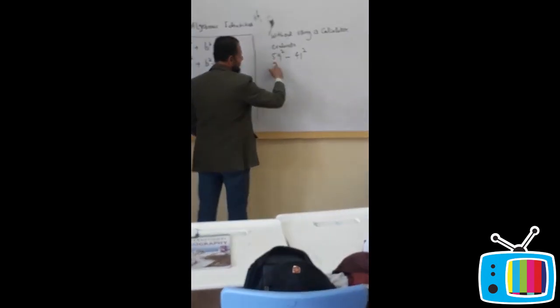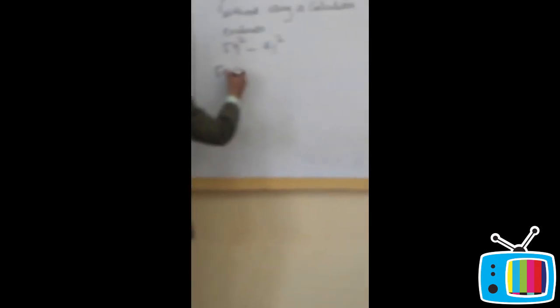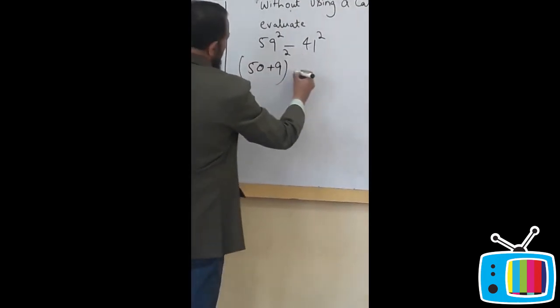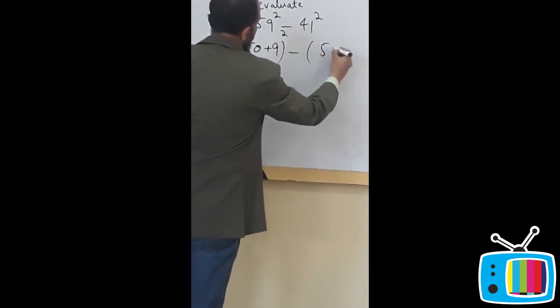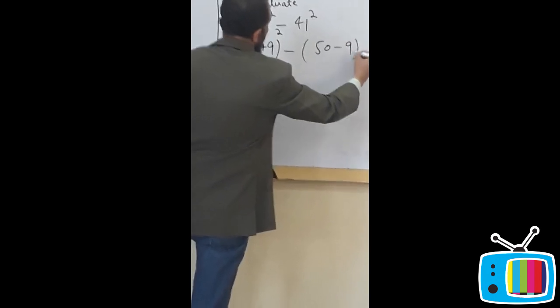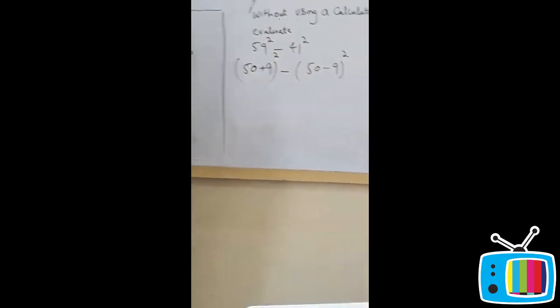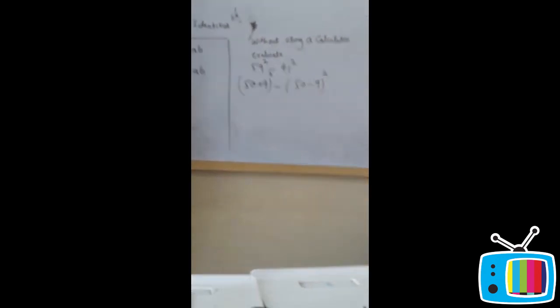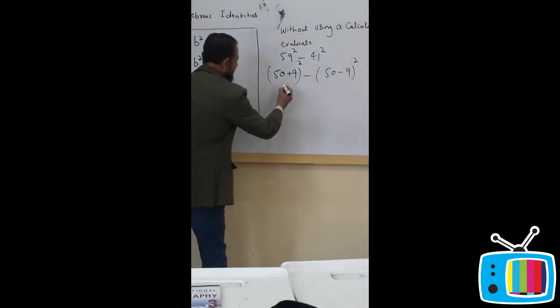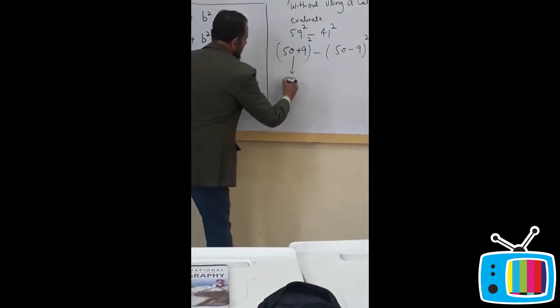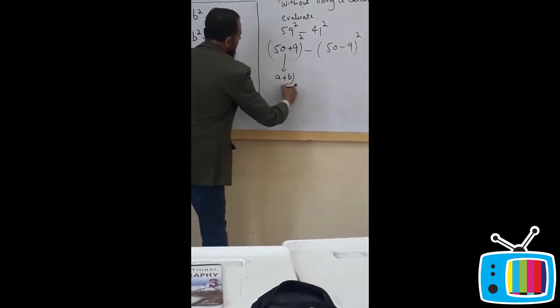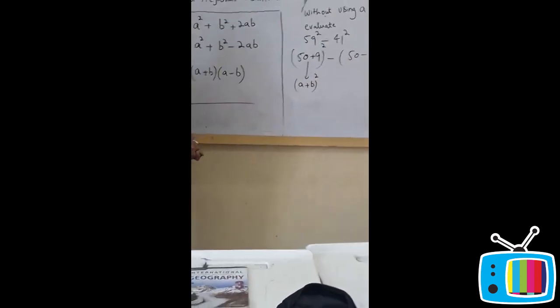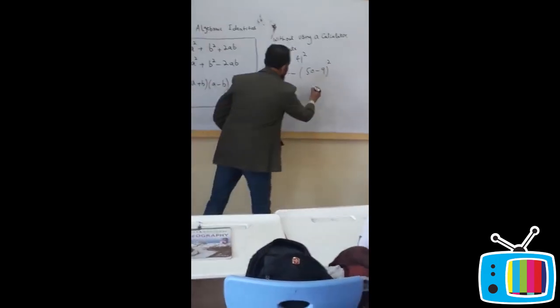Let's flip this number (50+9)² minus (50-9)². That's very interesting. Now, look at this. This is of the form (a+b)². And this one is of the form (a-b)².